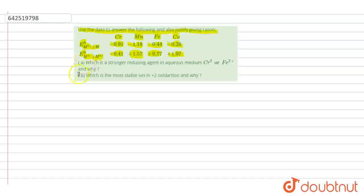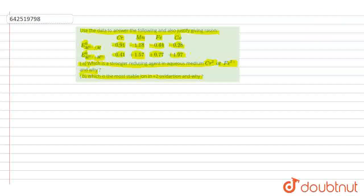In this question, two parts are given. In first part, we have to determine which is the stronger reducing agent in aqueous medium, Cr²⁺ or Fe²⁺ and why. In second part, which is the most stable ion in plus 2 oxidation state and why.